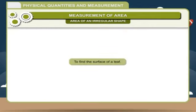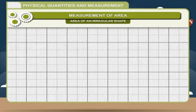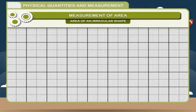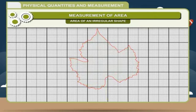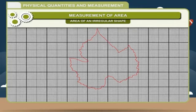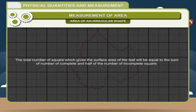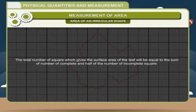Activity — To find the surface area of a leaf: Take a graph paper having a small square area of one square millimeter. Place a leaf on the graph paper and draw its outline. Remove the leaf and count the number of complete and incomplete squares. Neglect those squares which have less than half coverage. The total surface area of the leaf equals the number of complete squares plus half the number of incomplete squares.